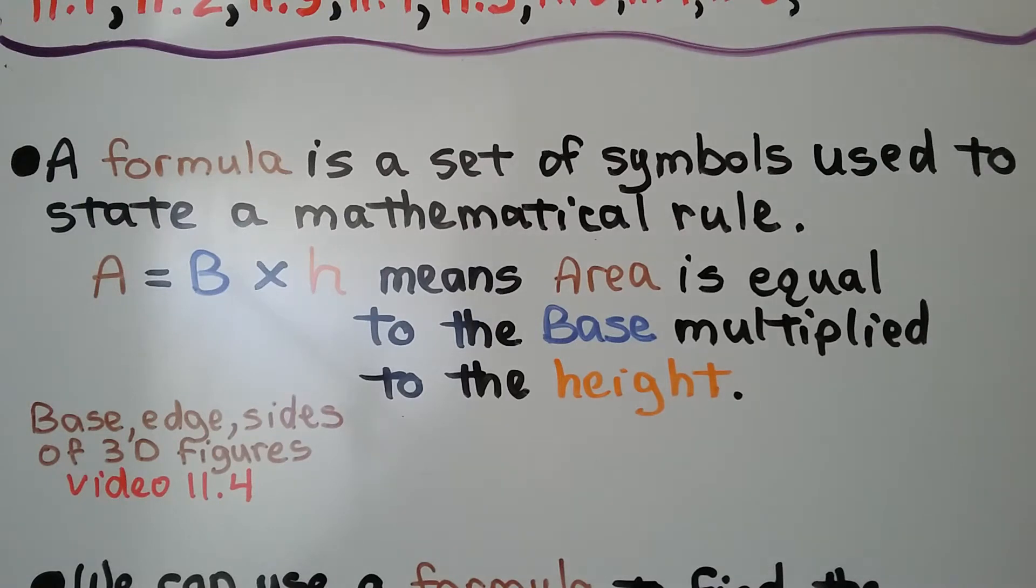A formula is a set of symbols used to state a mathematical rule. A equals B times H means area is equal to the base multiplied by the height. We learned about base, edges, and sides of 3D figures in 11.4, and these are linked in the description if you need them.